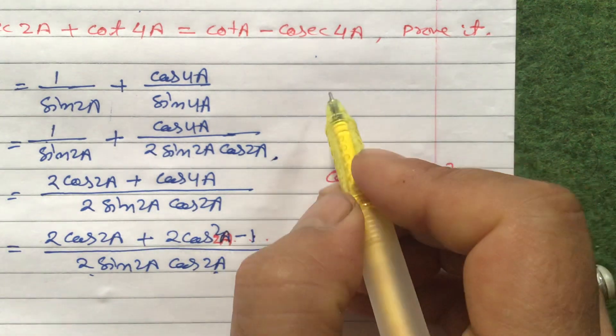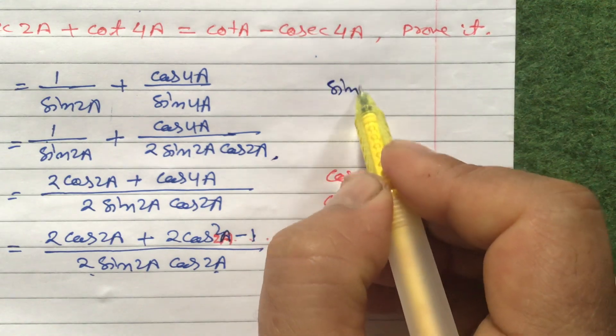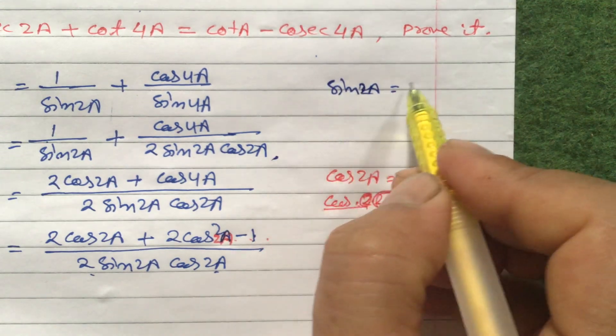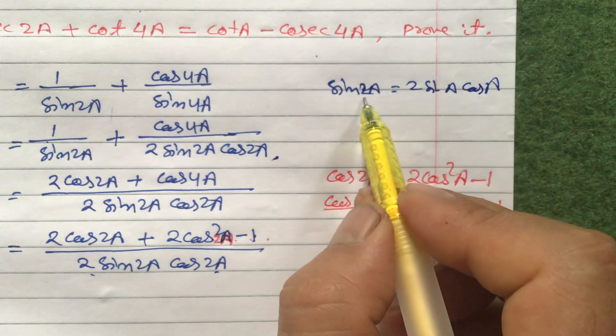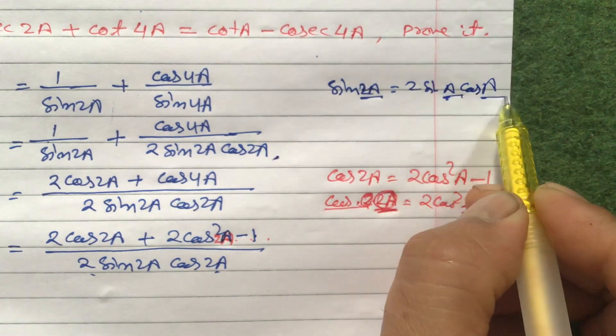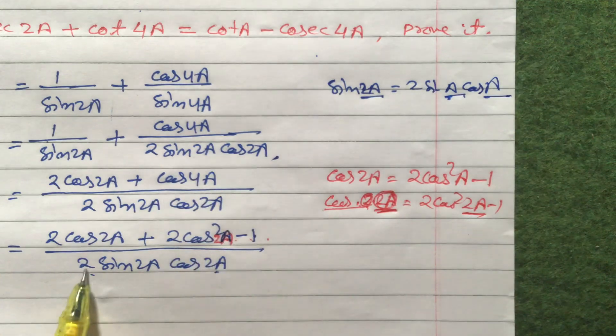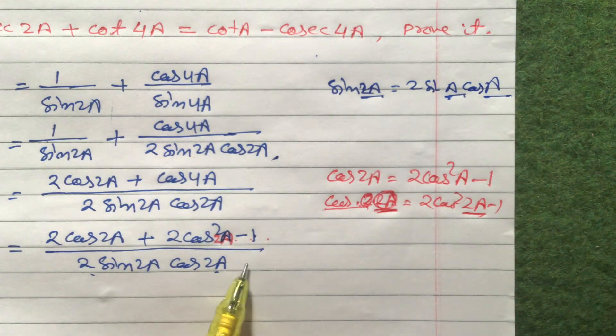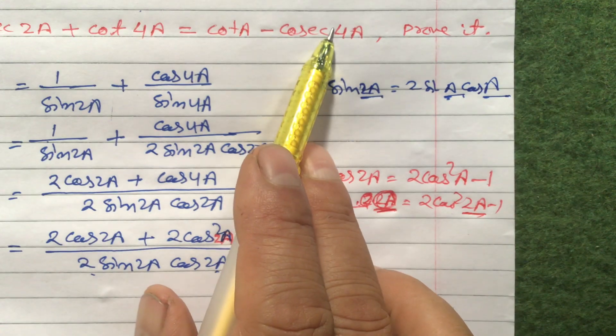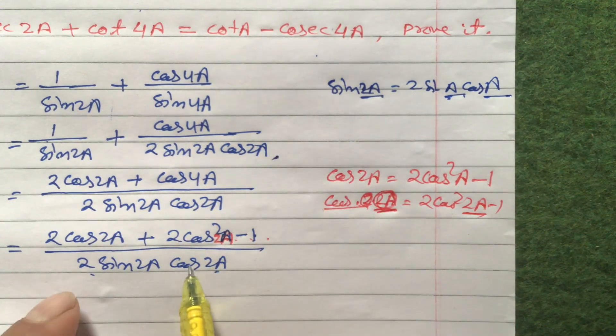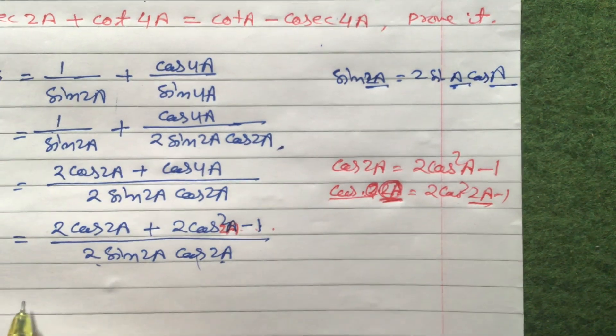Because our formula is like this: sin 2a formula is 2 sin a cos a. So if here is 4a, then here will be 2a 2a. So we are applying like this. So 2 sin 2a cos 2a will be equal to sin 4a. So 1 by sin 4a is cot 4a. We can get it like this. So we can separate this one.